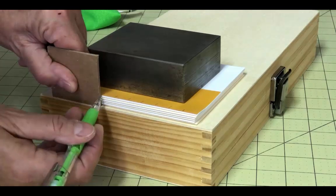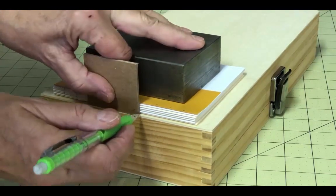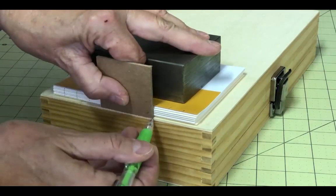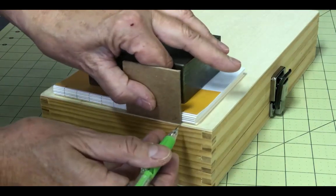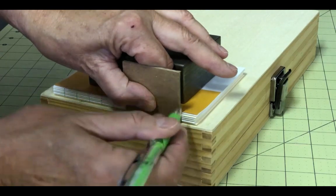Once you've marked the edges, you want to be careful to maintain the orientation of the signatures. If you get them turned around, your signatures won't line up correctly. If you're prone to turning things around and upside down while working, you might want to mark the orientation of each one with a post-it note.